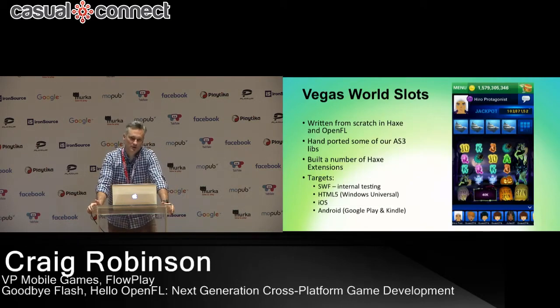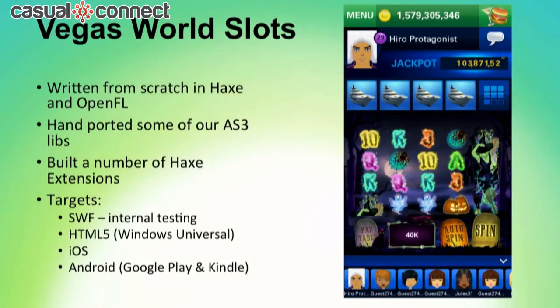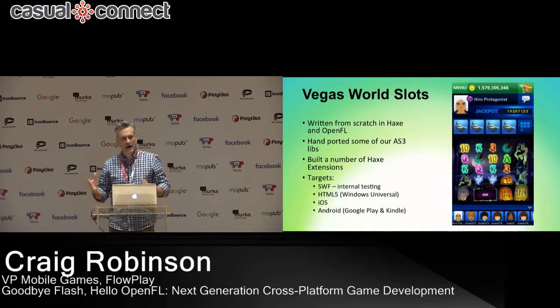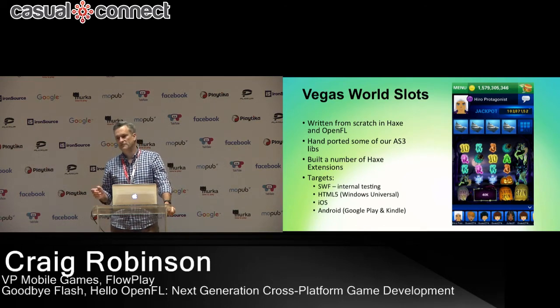At FlowPlay, we've worked on a number of projects with OpenFL and Haxe. The first was our Vegas World Slots product, which we built from scratch using Haxe and OpenFL. We ported some of our existing AS3 libraries by hand and built some Haxe extensions that allow access to native SDKs for analytics and monetization. When developing, we target SWF for testing — doing our testing and debugging locally against a Flash target — which allows fast iteration and debugging within our IDE. Commercially, we've produced an HTML5 version wrapped in a Windows Universal wrapper for the Windows App Store, and iOS and Android native builds on iTunes, Google Play, and Kindle stores.